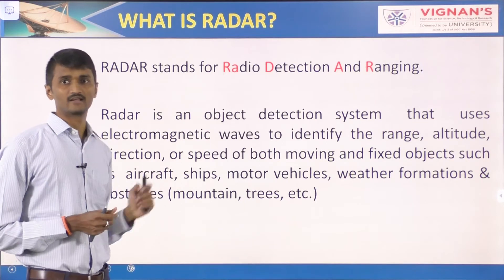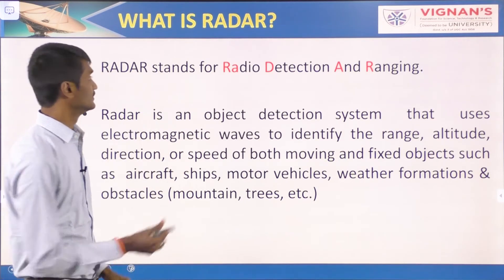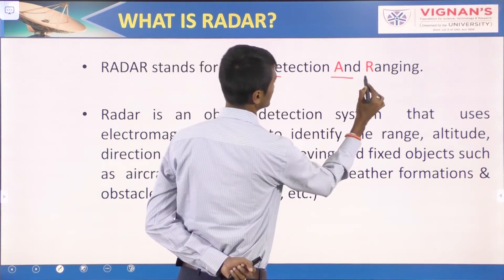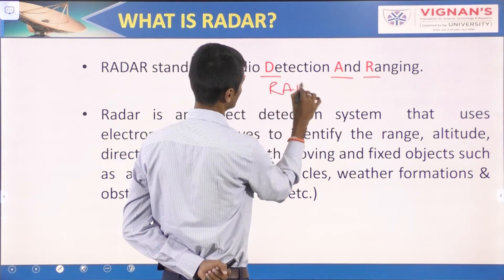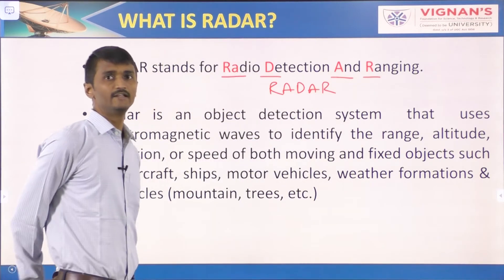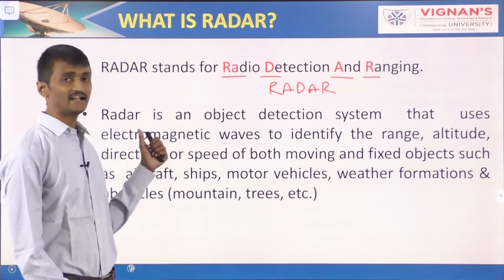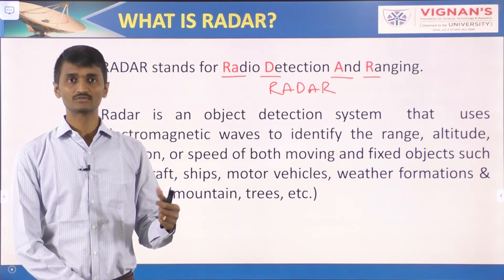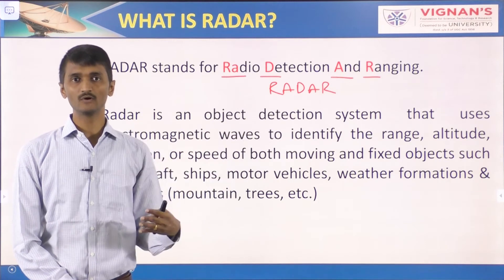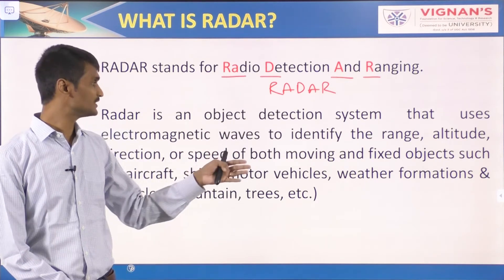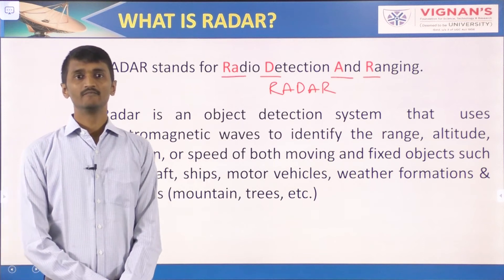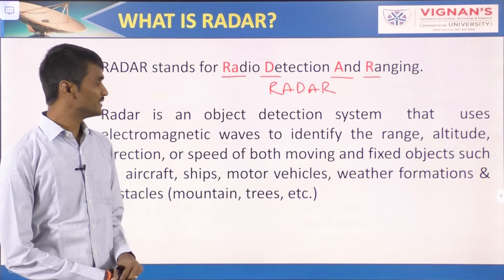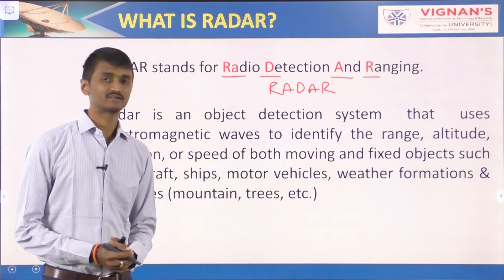Radar stands for Radio Detection And Ranging. Radar is an object detection system that uses electromagnetic waves to identify the range, altitude, direction, or speed of both moving and fixed objects such as aircraft, ships, motor vehicles, weather formations, and obstacles like mountains and trees.